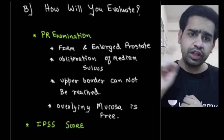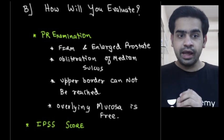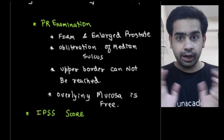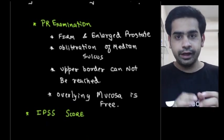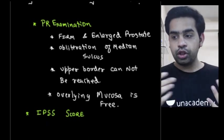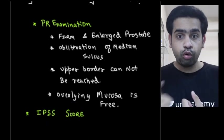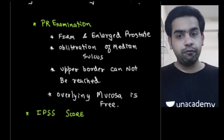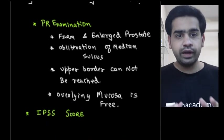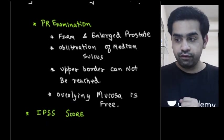You cannot reach the upper border of the prostate, which you can usually do in a normal man. The overlying mucosa over the prostate gland is free. This is important because in prostatic carcinoma, there is a very high chance that the overlying mucosa would not be free — it would be nodular. These are the features you get on per rectal examination in this patient.